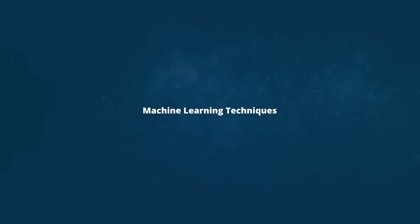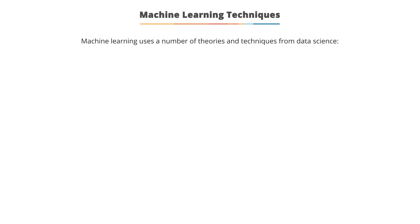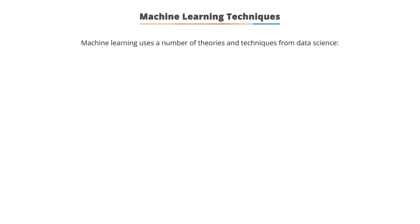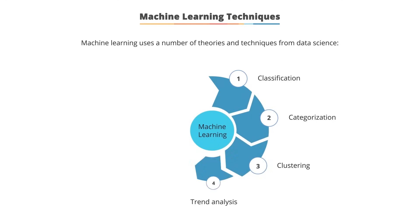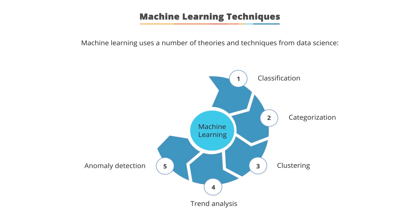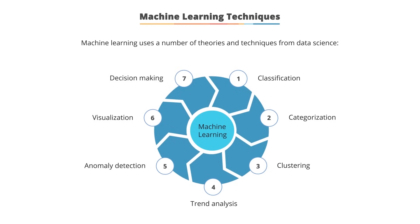Machine learning uses a number of theories and techniques from data science. Here are some machine learning techniques: classification, categorization, clustering, trend analysis, anomaly detection, visualization, and decision making.